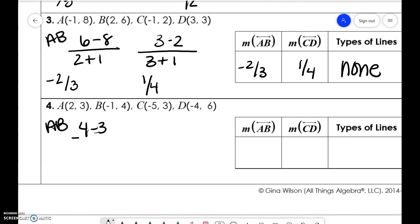AB, 4 minus 3 and negative 1 minus 2, so 4 minus 3 is 1 over negative 3. CD, we have 6 minus 3 over negative 4 plus 5, so we have 3 over 1. We have 1 over negative 3 and 3 over 1. One is positive, one is negative, and they are flipped, so these are perpendicular.